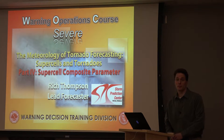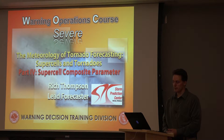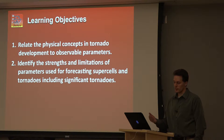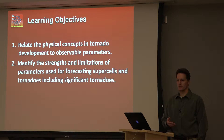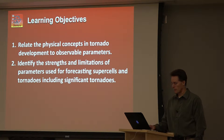We're going to proceed to part four of our five-part series looking at supercells and tornado genesis. Here we're going to start looking at some of the environmental ingredients — how do we diagnose supercell potential based on the environment — combining the conceptual models with what we can observe. The learning objectives are to relate the physical concepts of tornado development, how we relate the environment to supercell formation, and look at the strengths and limitations of two specific composite parameters: the supercell composite and the significant tornado parameter, and how to interpret and use these composite parameters.